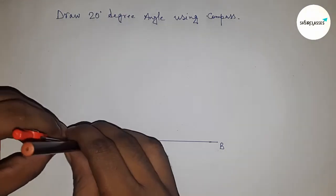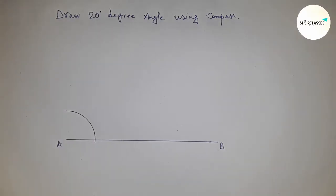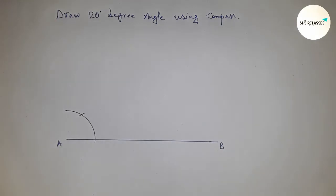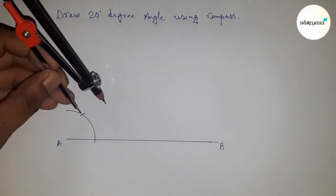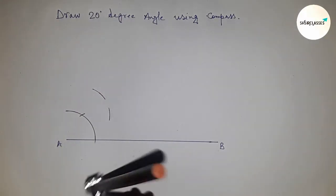Taking any length and drawing an arc by this way. So first I am going to construct a 40-degree angle, then I will bisect this to get a 20-degree angle. So first constructing a 40-degree angle.